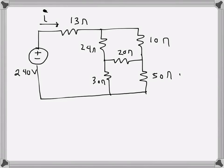I have a circuit here. I need to find the current I and also the resistance that can be seen from here — R_ab.